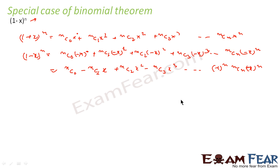So you get this formula where you have alternating plus and minus signs — this is the special case for (1 − x)^n. You don't need to memorize this, but it's good to know; if you know this, you can solve questions in a faster way.